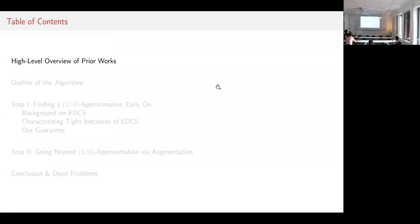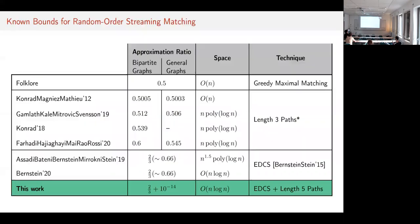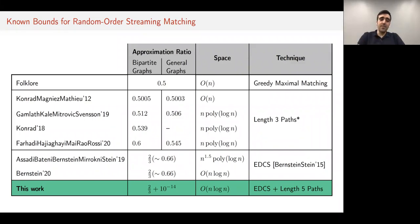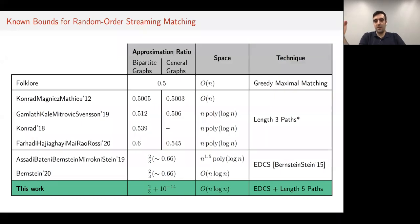From the audience: Is there a lower bound for the random order case, as there was for adversarial order? Currently there is no lower bound ruling out even a 1 − ε approximation. We do show a lower bound at the end of the talk: if you want to obtain a 1 − ε approximation, the space needs to depend exponentially in 1/ε. But for constant ε, that doesn't rule out, say, a 0.99 approximation with near-linear space.